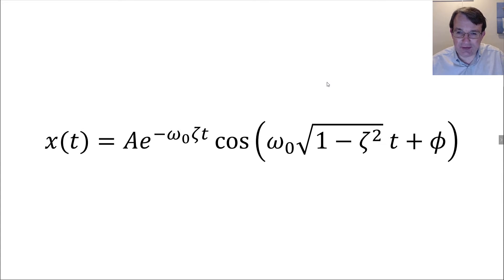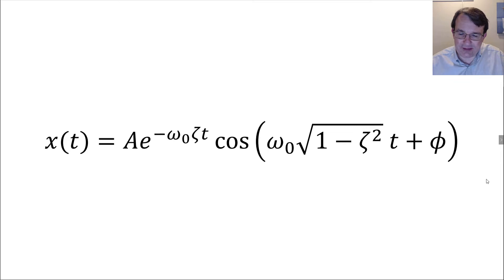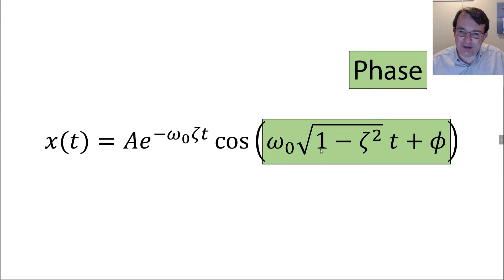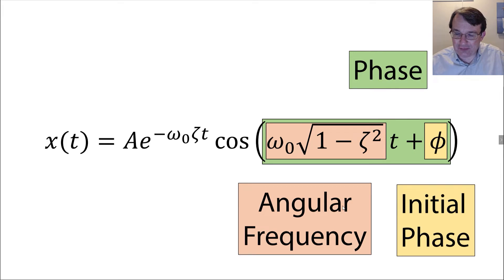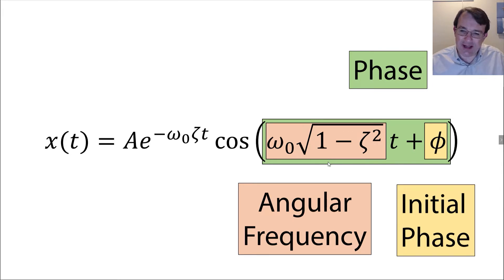Here we have the expression for the displacement of an underdamped harmonic oscillator. In some ways it looks similar to a simple harmonic oscillator — we have a cosine term with something in front of it. The phase is determined by the expression highlighted in green. Just like a simple harmonic oscillator, it consists of two parts: the angular frequency multiplied by time, and the initial phase. A phase change of 2π brings us back to where we started, so the larger the angular frequency, the higher the frequency of oscillation.